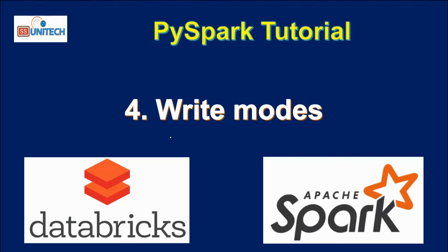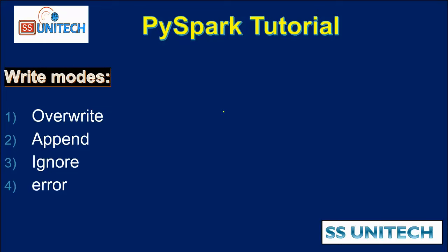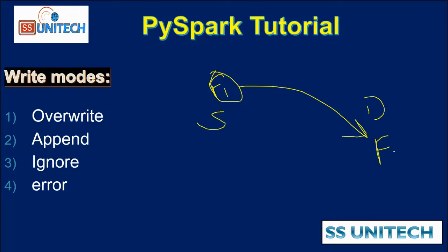So what is the write mode? Let's assume we have a source and a destination. Our requirement is we have a file, the f1 file, at the source and we just want to copy this file f1 from source to sink. The next time we execute our code to copy the same f1 file from source to sink, the right mode will come into the picture. If we directly copy from source to sink again, it will throw an error saying the file is already available at the destination.